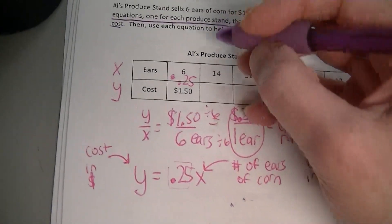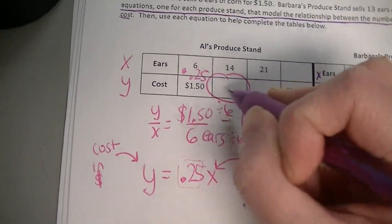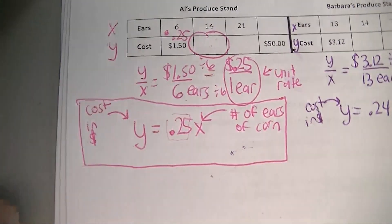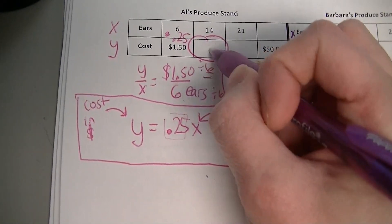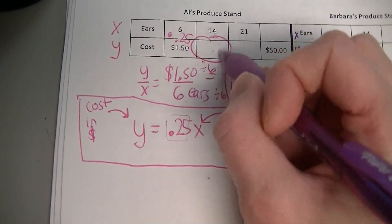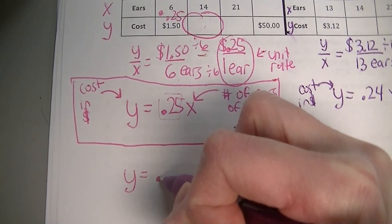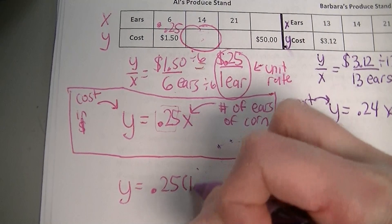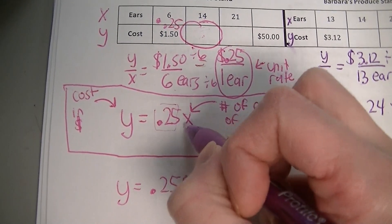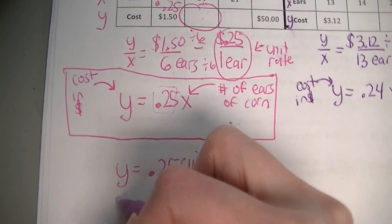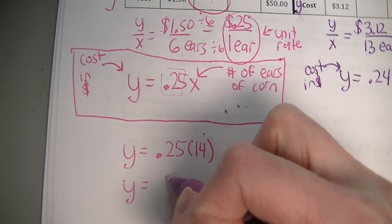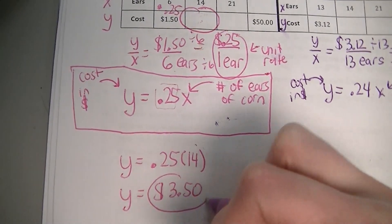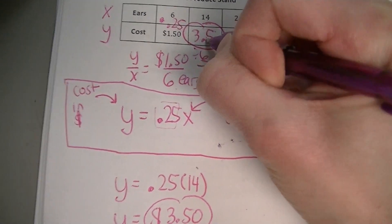For this first missing value I'll draw a circle around it. I'm looking for the cost, so that's y. Keep the same unit rate, and the number of ears of corn is given as 14, so I substitute 14 in for x. That means y equals 25 hundredths times 14. You need to multiply 25 hundredths times 14 and you get $3.50. So I'll put $3.50 right there in the table.